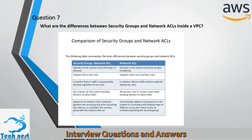Question seven: What are the differences between security groups and network ACLs inside a VPC? A security group operates at the instance level, but an ACL operates at the subnet level. Hence, the security group is the first layer of defense, and the network ACL, operating at the subnet level, is the second layer of defense.